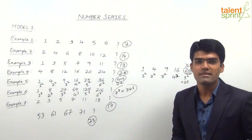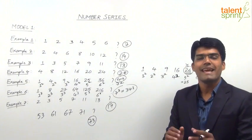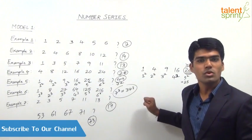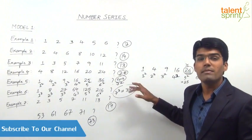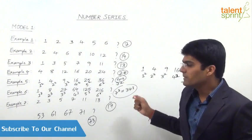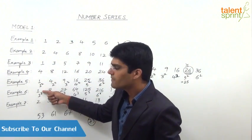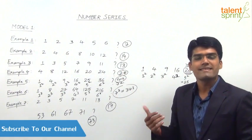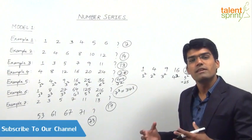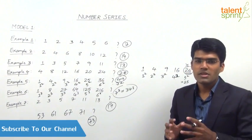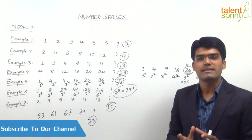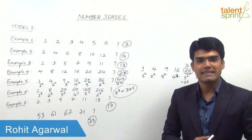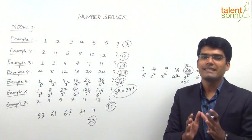That is what number series is all about — understanding the logic and getting the answers. Though all these examples show trivial series, the same can be made more complicated if we start from a larger number. For squares and cubes, starting from 16² or 16³ will take more time to recognize. So make sure you think in all possible directions within the limited time. The more you practice, the easier it becomes.